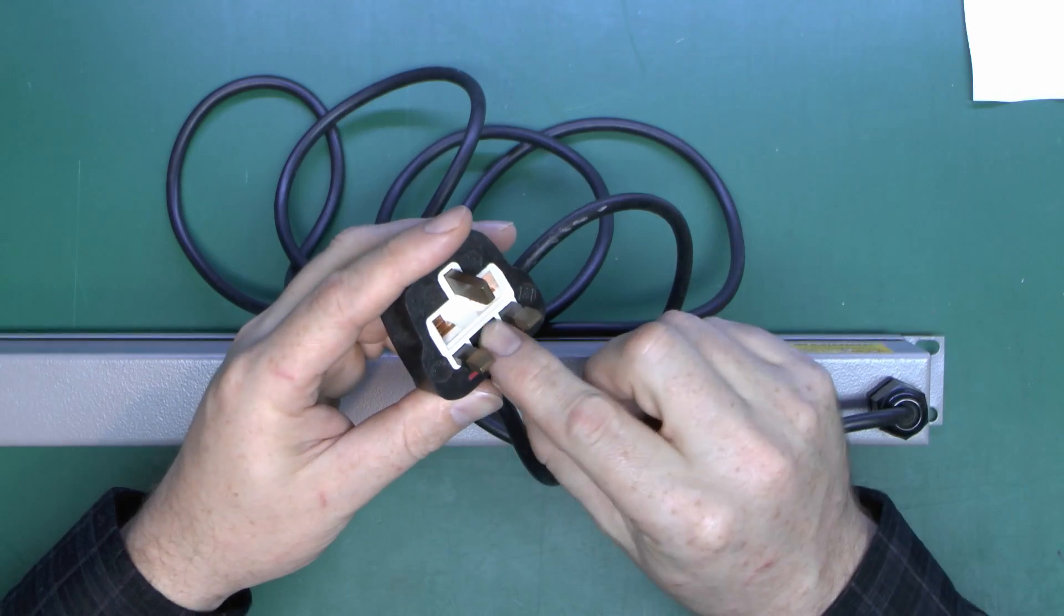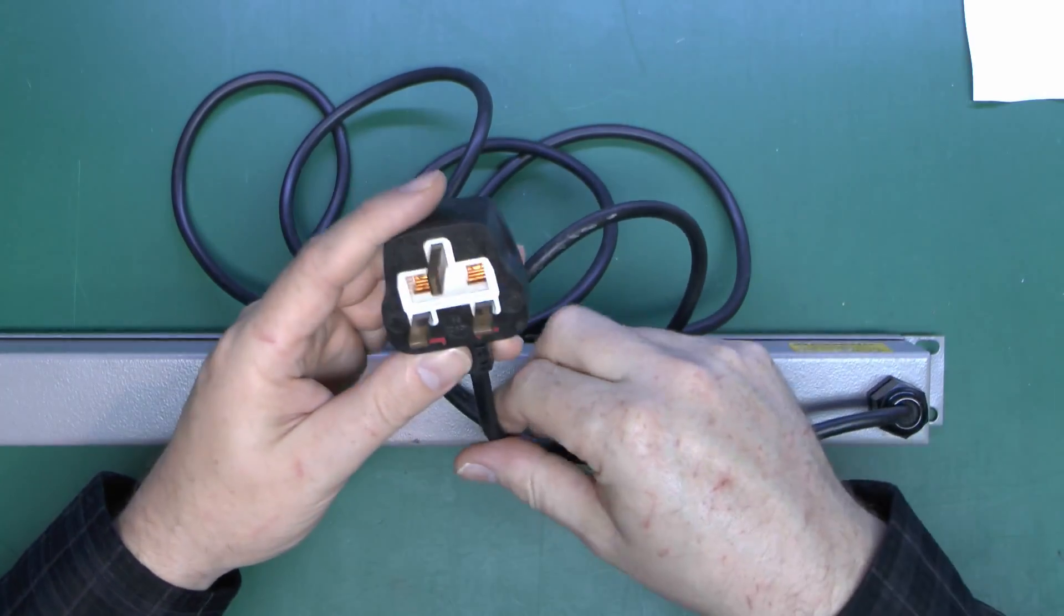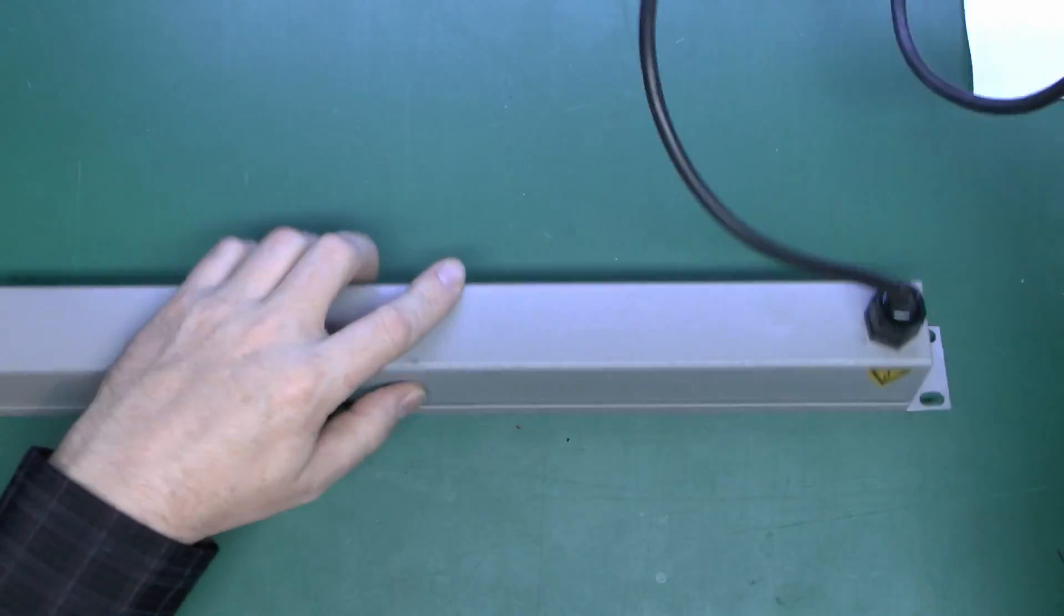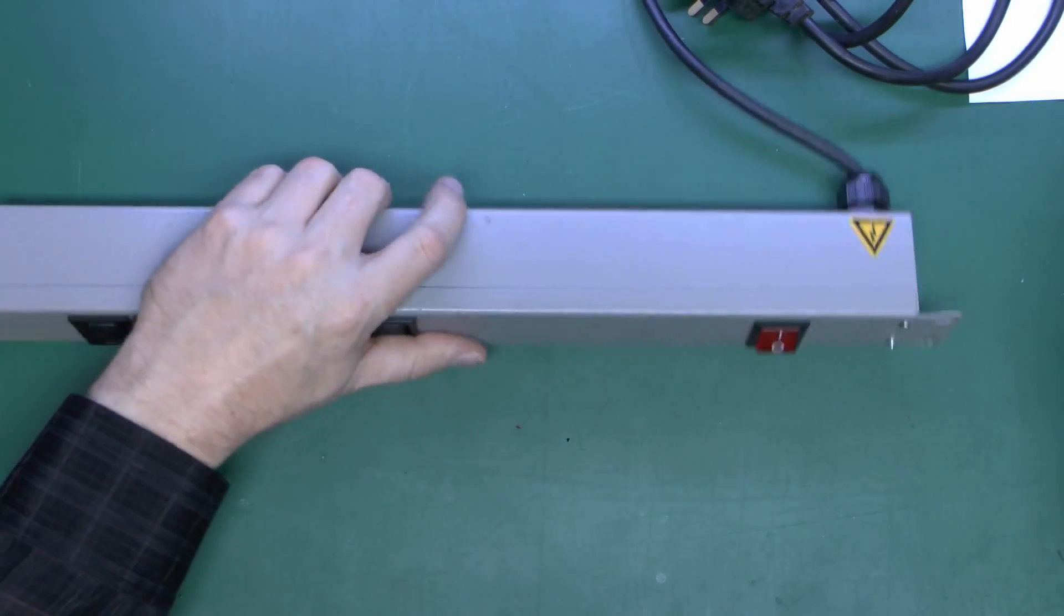Now the fuse here is actually missing. It normally has a fuse in there with a little plastic carrier, but that's been removed as this thing is apparently faulty. So let's open it up and see what's inside.